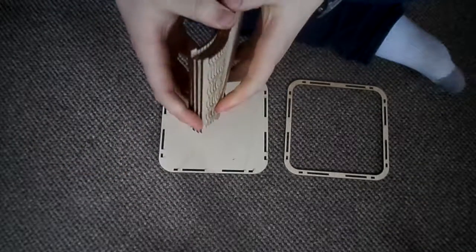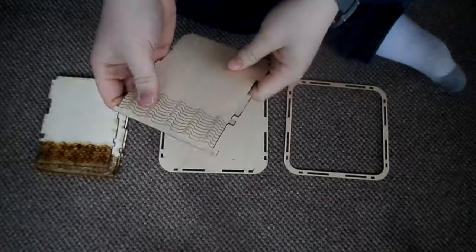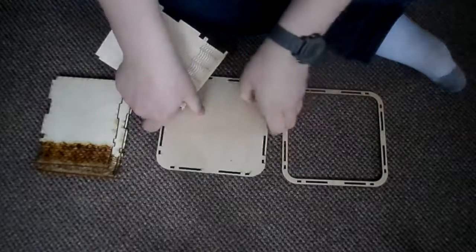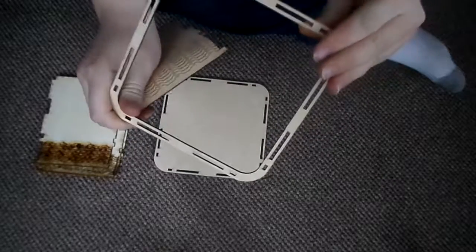When you get the box, it will be in six pieces: four sides, the bottom which is quarter-inch plywood, and the top which is open and is eighth-inch plywood.